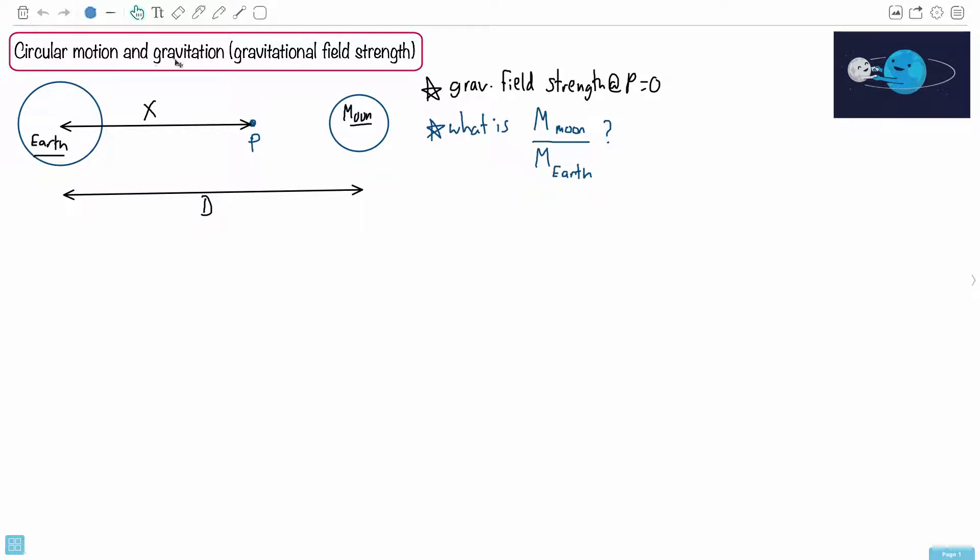This question is about circular motion and gravitation, and specifically its gravitational field strength. So let's take a look at this question here. They give you this diagram. We've got the Earth and the Moon, and there is this sort of gravitational cosmic dance. That's why I thought that picture was cute.